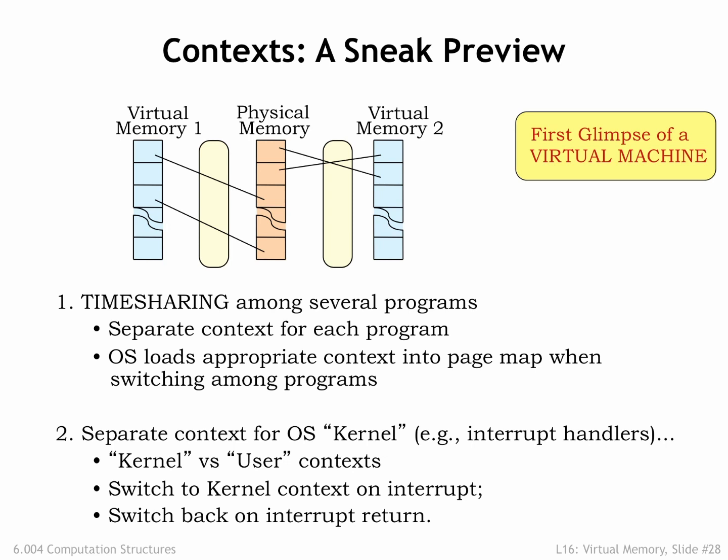Exceptions in running programs cause the hardware to switch to the kernel context, which we call entering kernel mode. After the exception handling is complete, execution of the program resumes in what we call user mode. Since the OS runs in kernel mode, it has privileged access to many hardware registers that are inaccessible in user mode. These include the MMU state, I/O devices, etc.